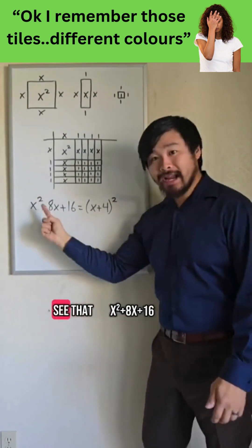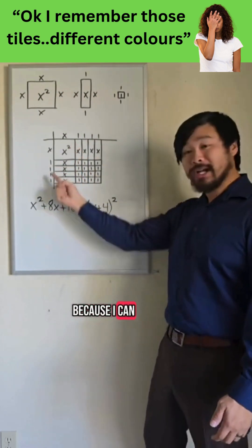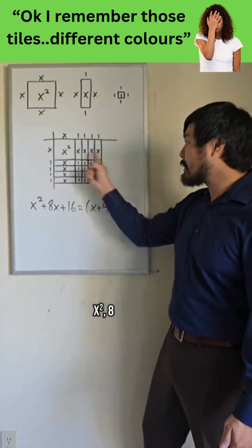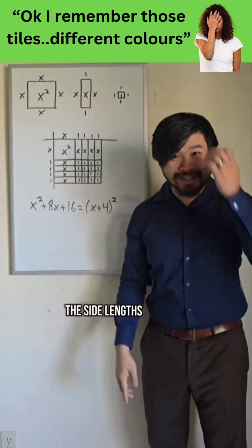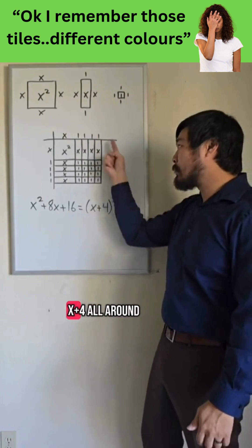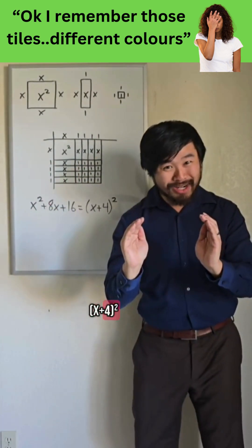So with these tiles, I can see that x squared plus 8x plus 16 is a square, because I can arrange them as a square. x squared, 8x is 16 ones. Now, what are the side lengths of this square? Well, we have x plus 4 all around. So I can rewrite this as x plus 4 quantity squared.